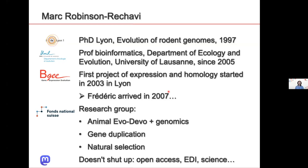I've been a professor of bioinformatics in the Department of Ecology and Evolution of Lausanne, Switzerland, since 2005, where I had a group which, on one hand, studies evolutionary biology, and on the other hand, developed bioinformatics tools, most importantly BG. BG actually started as a small side project on trying to have homologous gene expression in 2003 while I was still in Lyon. I restarted the program when I joined Lausanne, and then I hired Frédéric — and that's when the project really became functional.